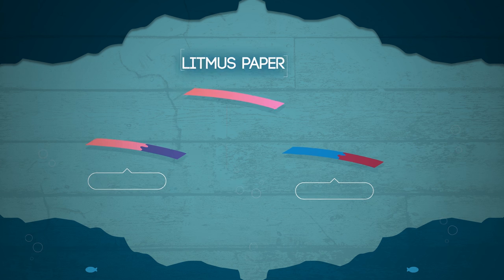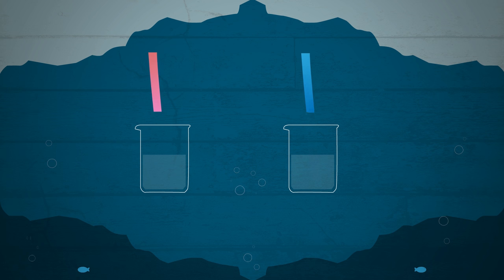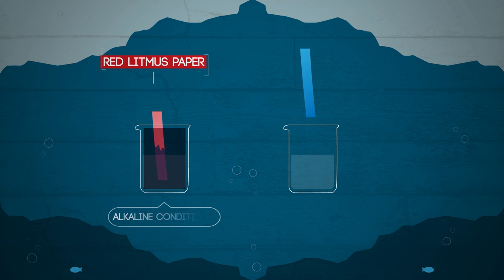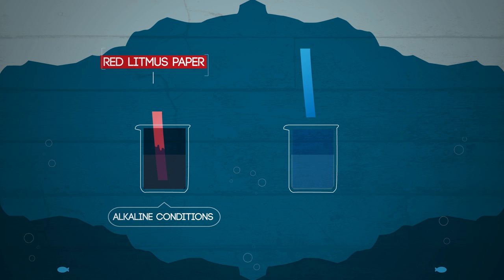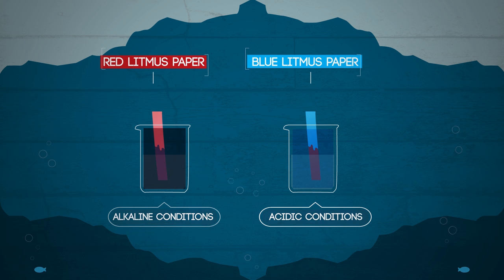It comes as red litmus paper and blue litmus paper. Red litmus paper changes colour from red to blue under alkaline conditions, but no change under acidic conditions. Blue litmus paper changes colour from blue to red under acidic conditions, but no change under alkaline conditions. So just remember that red litmus paper changes colour for alkalis and blue litmus paper changes colour for acids.